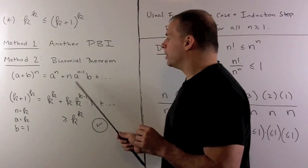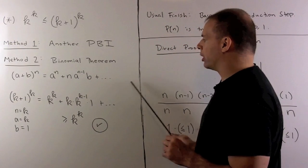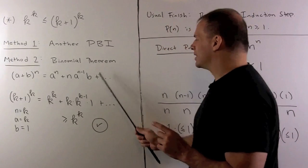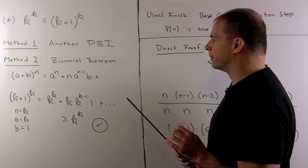When I expand this, we have a to the n plus n times a to the n minus 1 times b, then other terms. And since a and b are positive, what's left over is also going to be a sum of positive numbers.